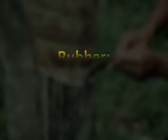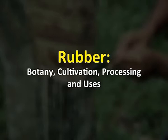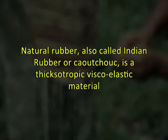Welcome, dear friends. Today's topic is rubber and we will discuss its different aspects: botany, cultivation, processing, and uses. Natural rubber, also called Indian rubber or kachu, is a thixotropic viscoelastic material.